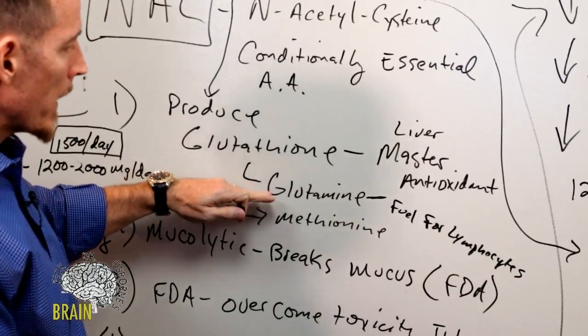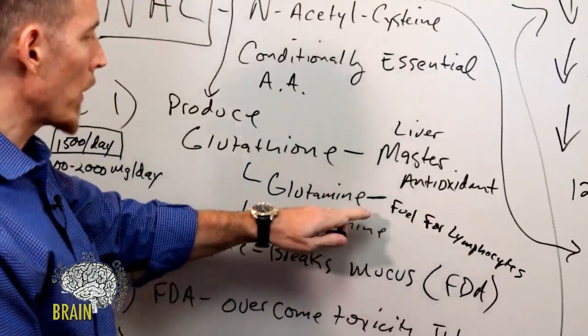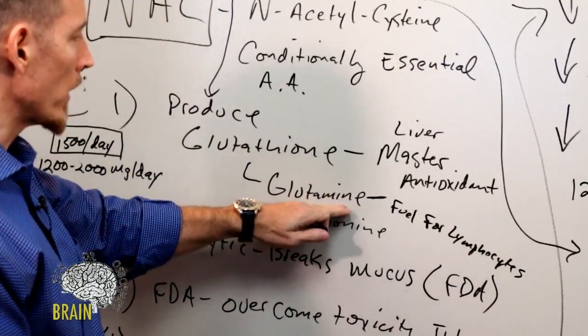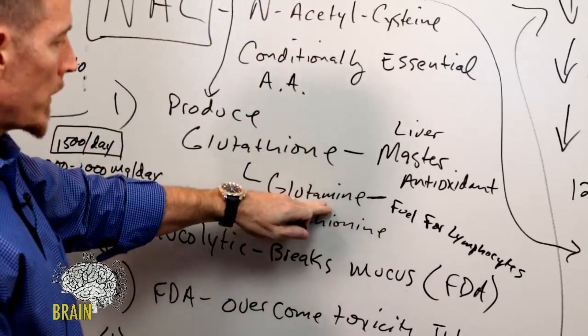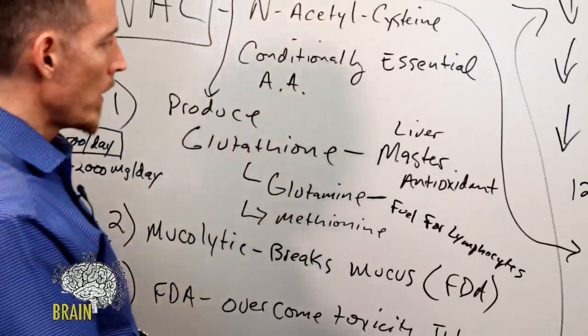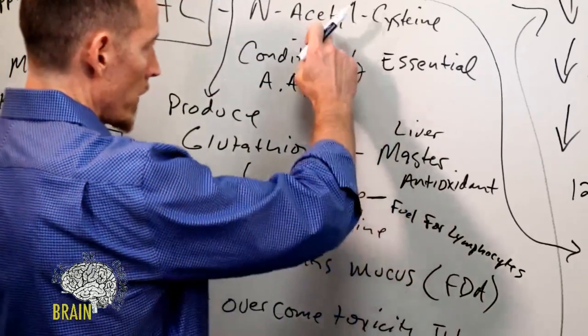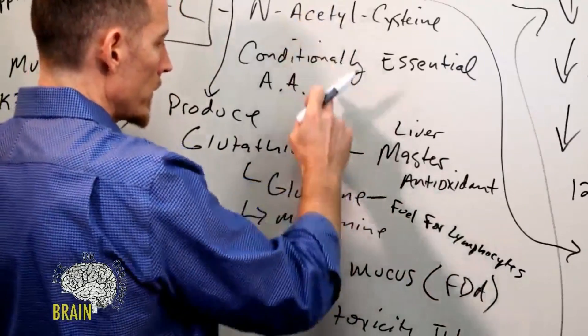L-glutamine is the primary fuel source for lymphocytes. When people are sick, they're burning through their L-glutamine more aggressively. Now N-acetylcysteine helps to preserve glutamine and vice versa, glutamine helps to preserve N-acetylcysteine. A lot of people will take the combination of glutamine and N-acetylcysteine.